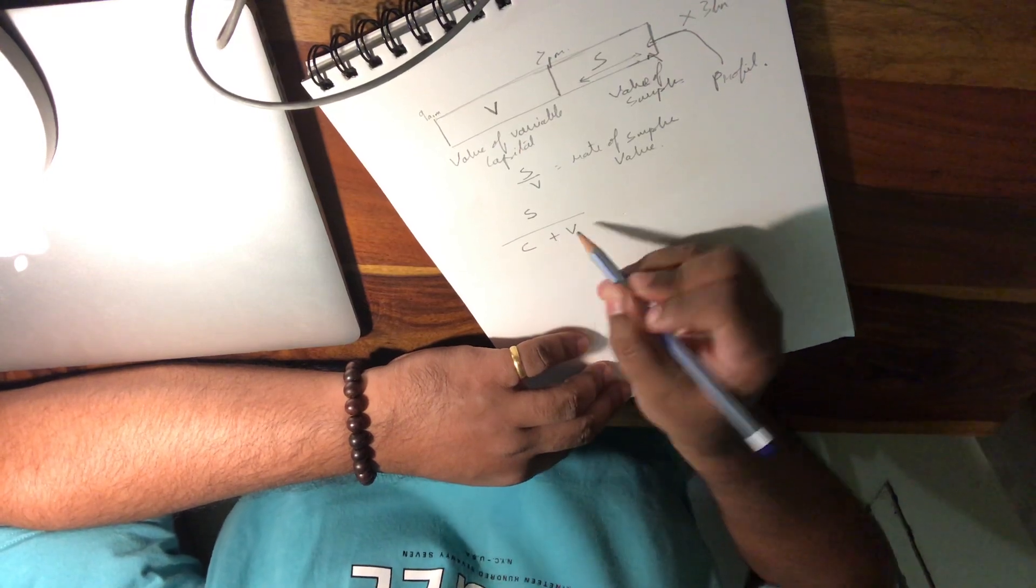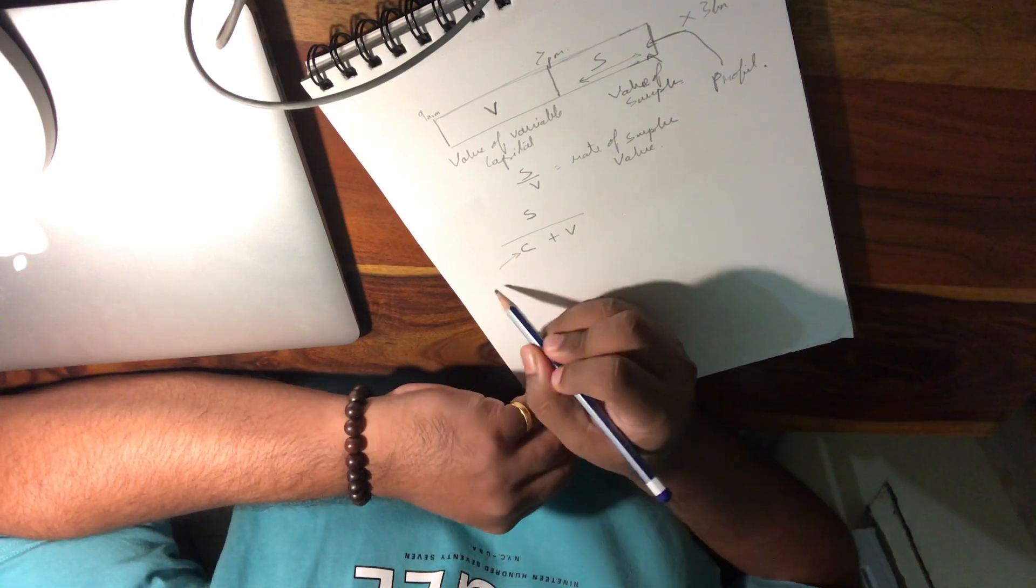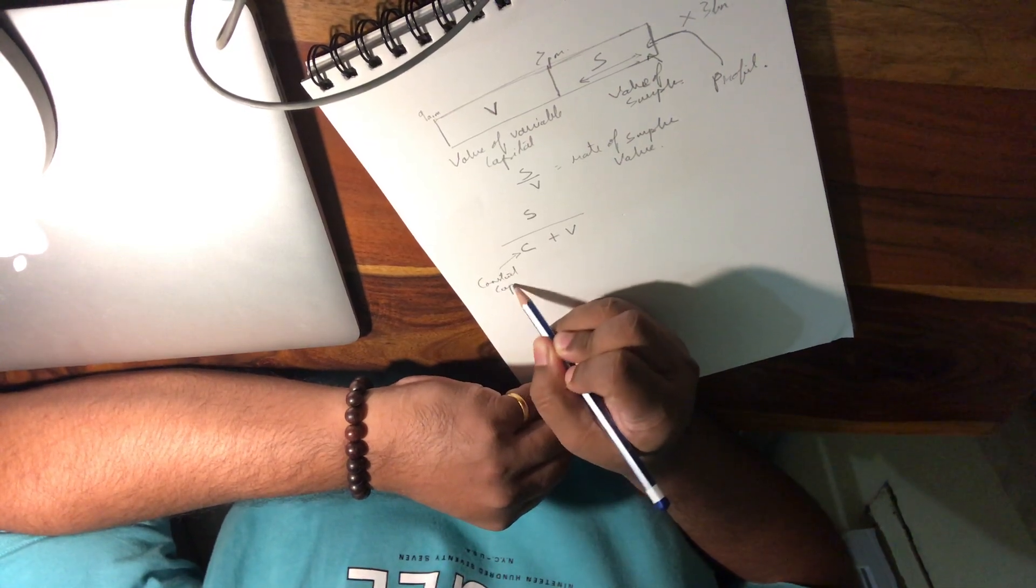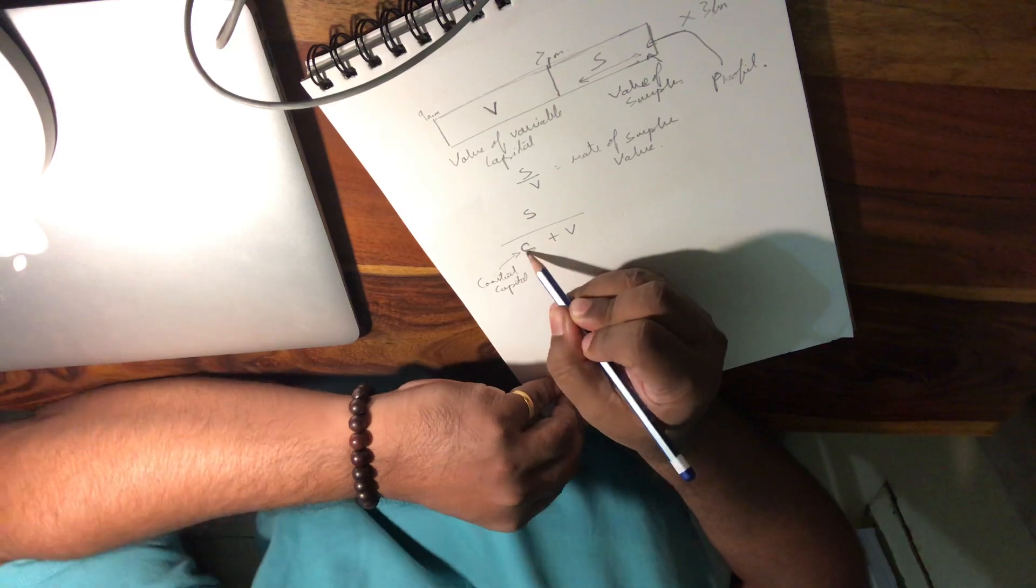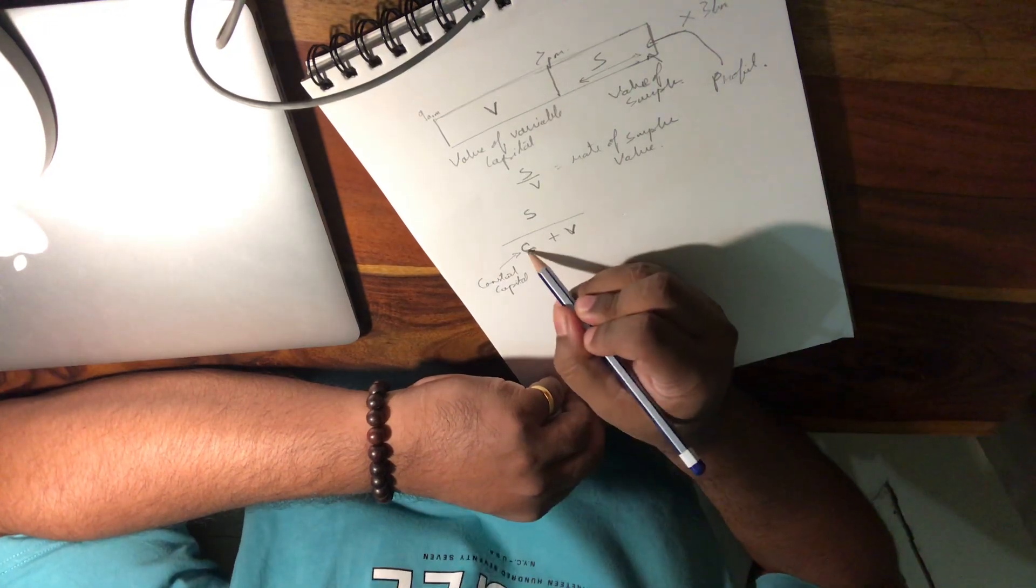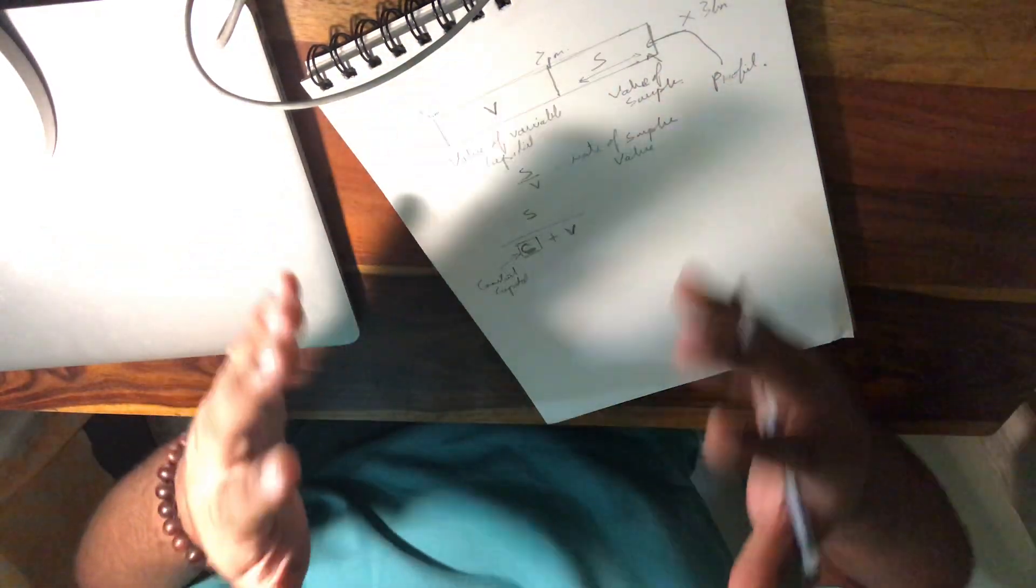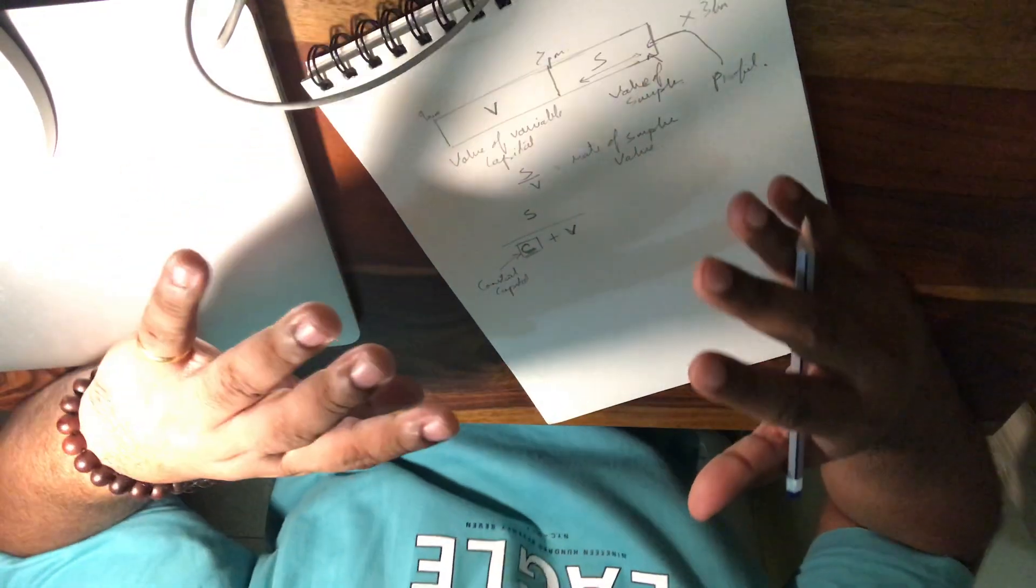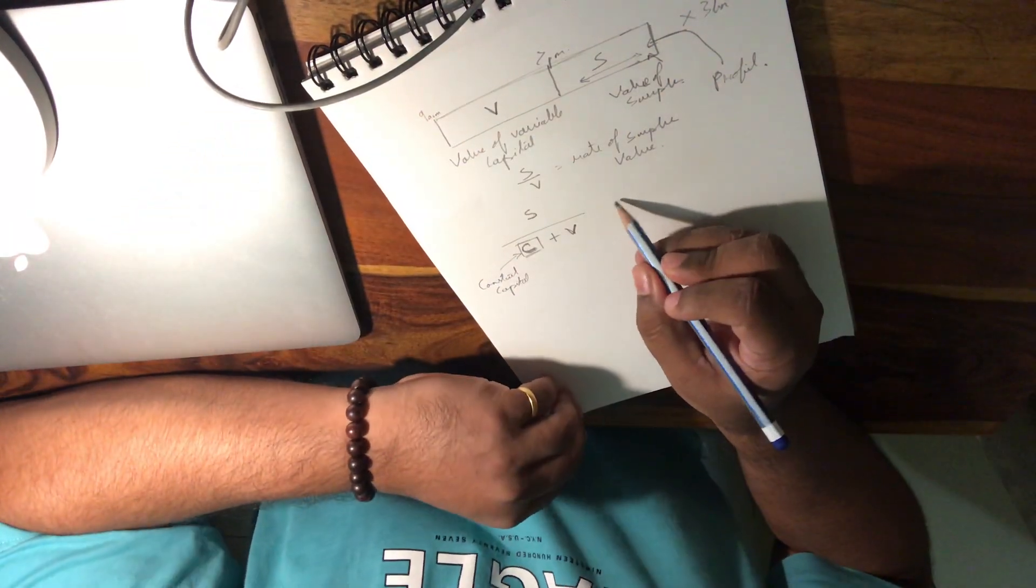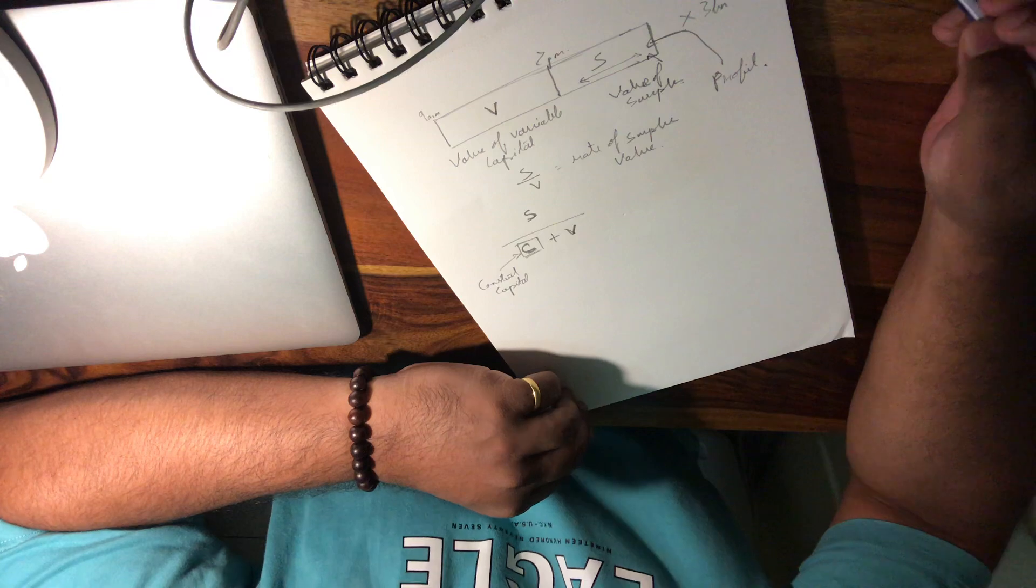C plus V. We already know what S and V stand for. C according to Marx is the constant capital—plants and machineries essentially—that is needed along with the human labor to produce the output. This is a constant because its value does not increase according to Marx. I mean, if you buy a machine, it does not have the capability to increase its value, so it's a constant.